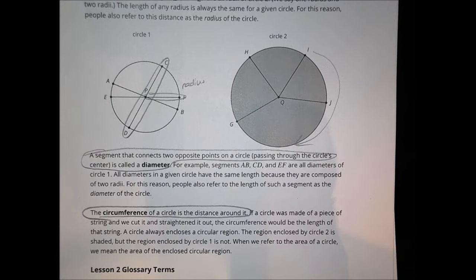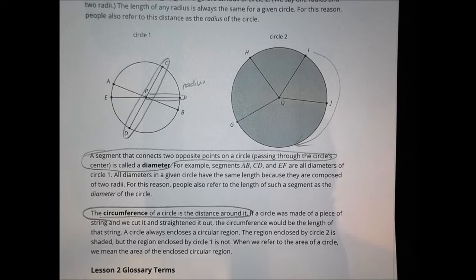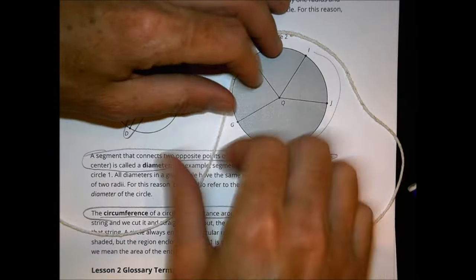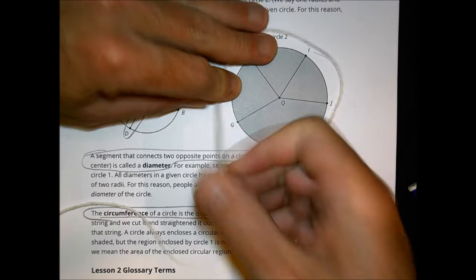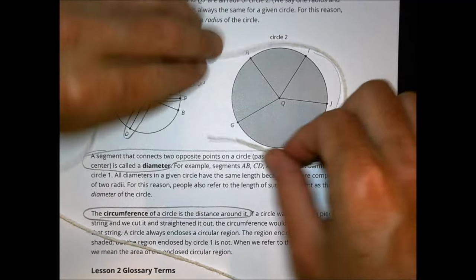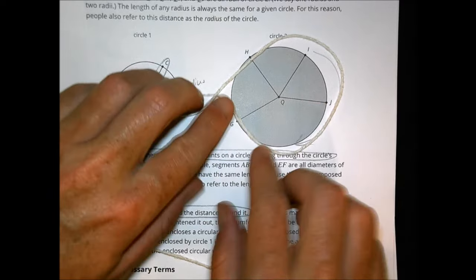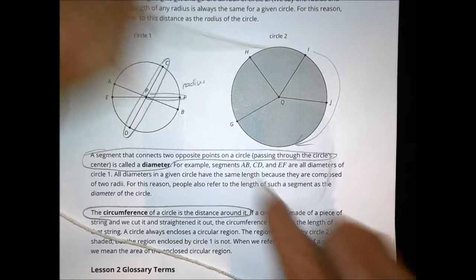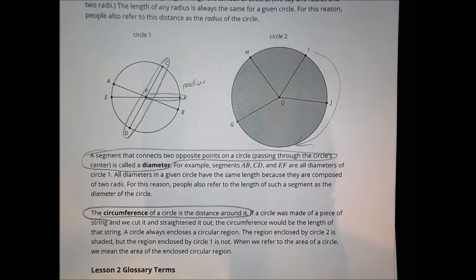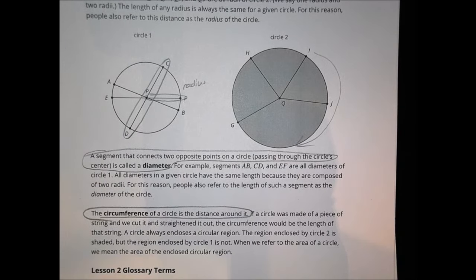The circumference of a circle is the distance around it — how far around the circle is. If we took a string and wrapped it around an object, then straightened it out and measured it, that length would be the circumference. So radius, diameter, and circumference were your keywords today.